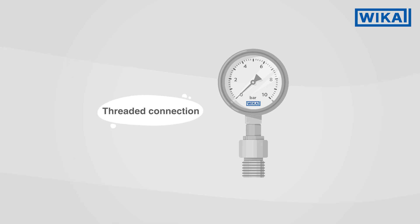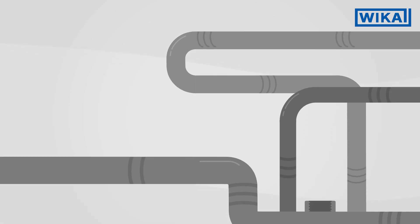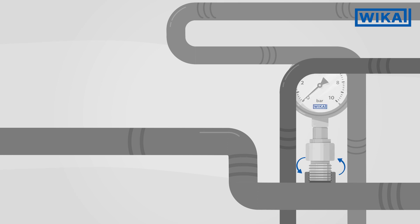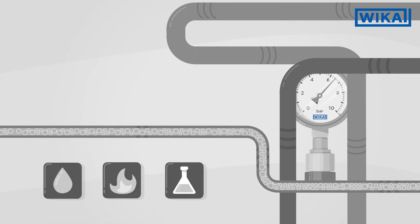Diaphragm seals with threaded connection only have a small mounting geometry. Threaded connections are easy to screw together. This makes them ideal for media that are transported in small pipelines, such as gases.